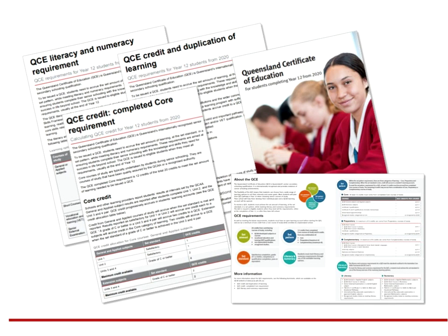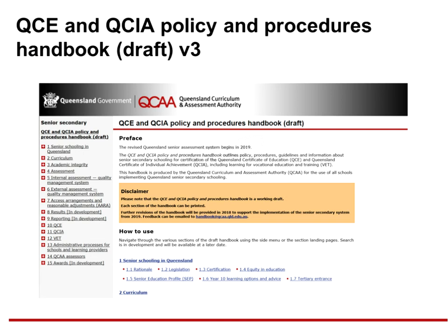Resources have been released to support information regarding the new QCE requirements. These are publicly available on the QCE requirements brochure and three fact sheets which address QCE credit, completed core requirement, QCE credit and duplication of learning, and QCE literacy and numeracy requirement. Those with school leader access in the QCE portal have access to the draft QCE and QCIA Policy and Procedures Handbook. As it is a draft, it is important to recognise that there will be revisions or updates in each version released.